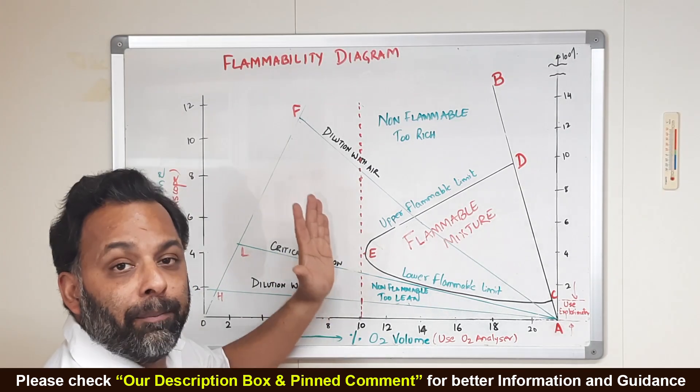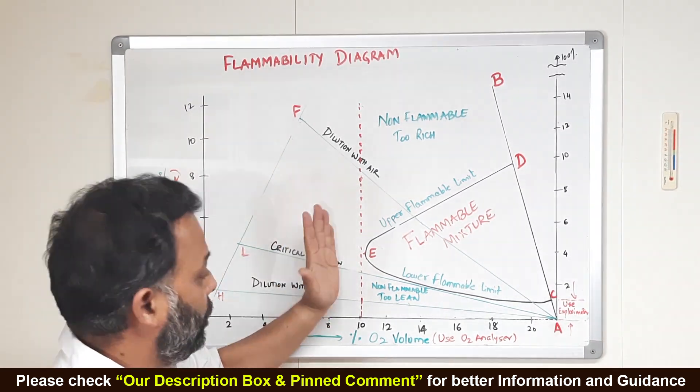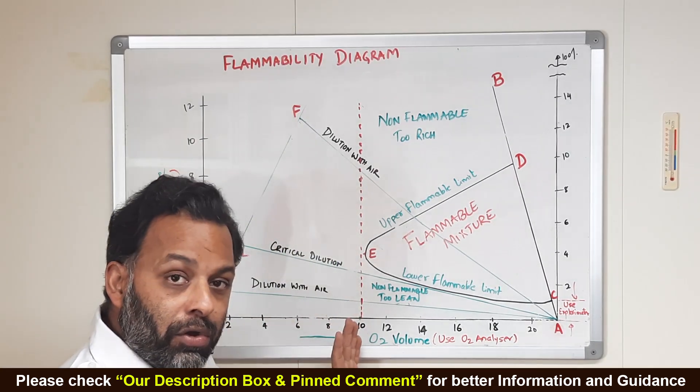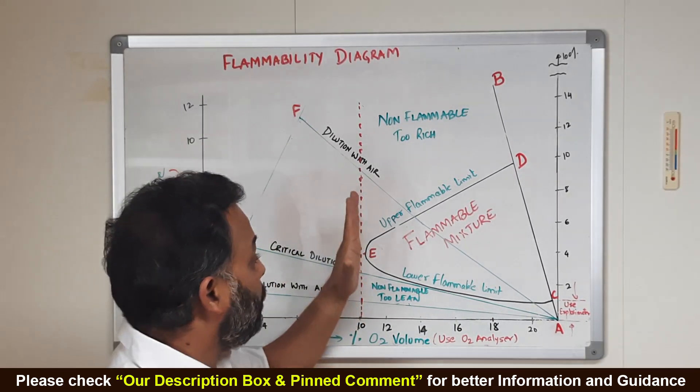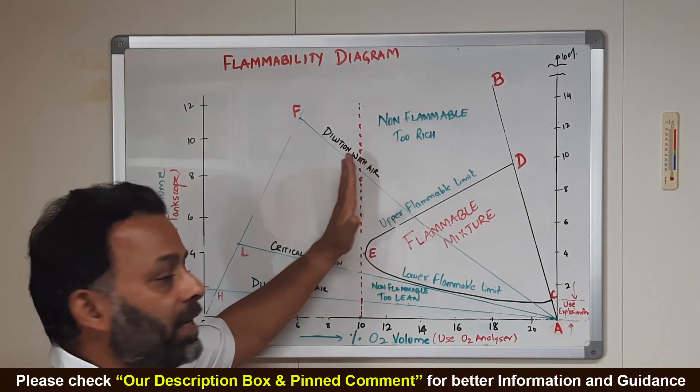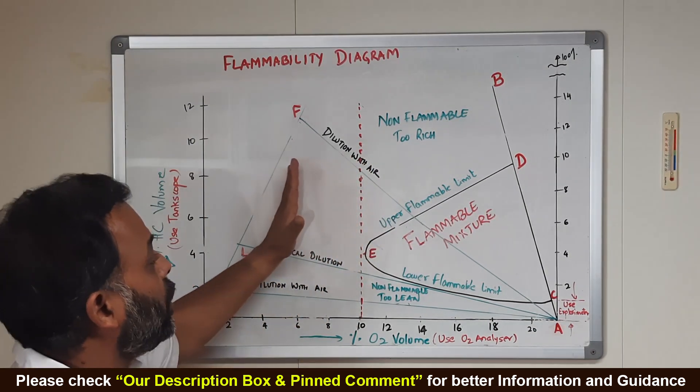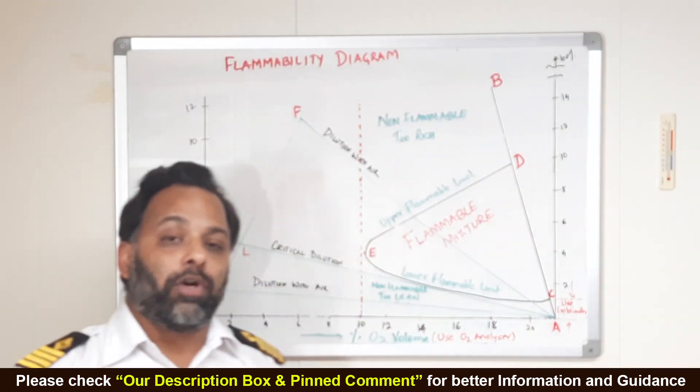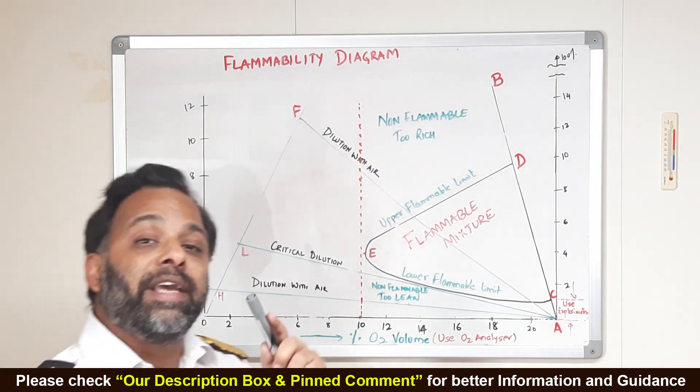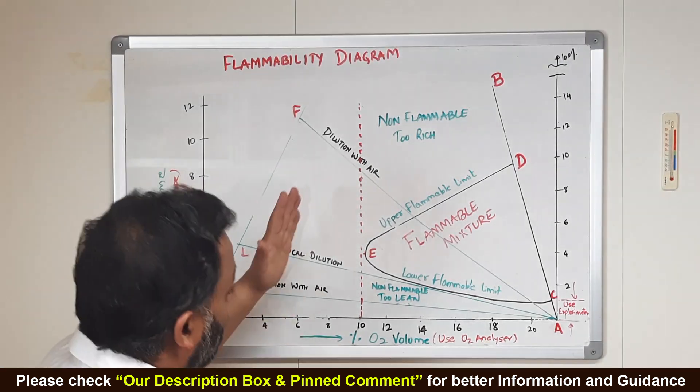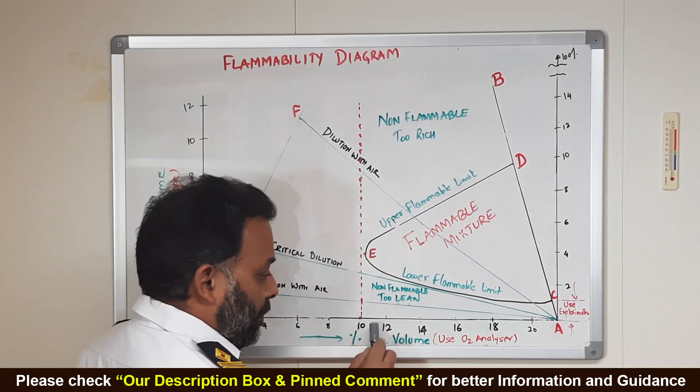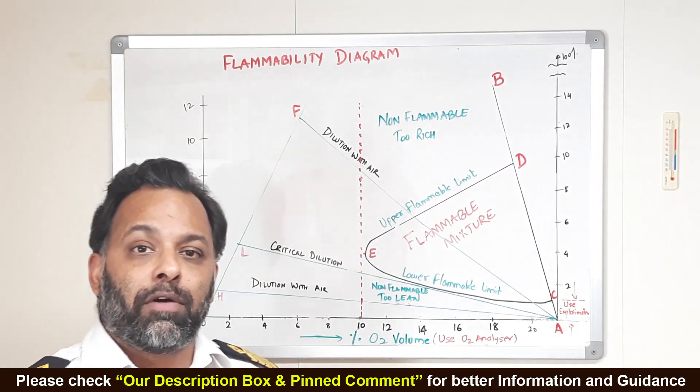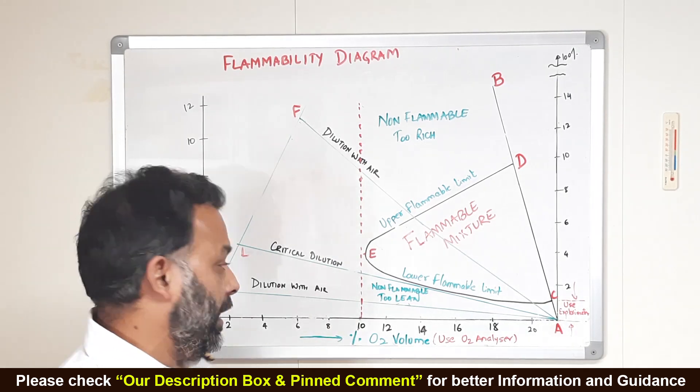Now, this is the minimum point at which there is sufficient oxygen for a fire to take place. If we keep on introducing inert gas further than this, we will come into a region, we will come to an area where the fire cannot take place because the amount of oxygen in the system is less than what is required. This point E is somewhere around 11% of oxygen. IMO says, if we have less than 8% of oxygen, we are absolutely okay and no fire will take place.